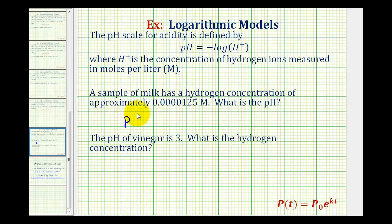So the pH of this milk would be equal to the opposite, or negative, common log of 0.0000125. Now we'll use the calculator to approximate the pH.